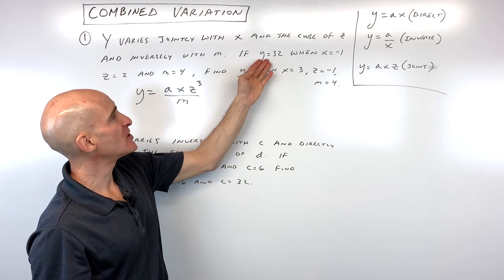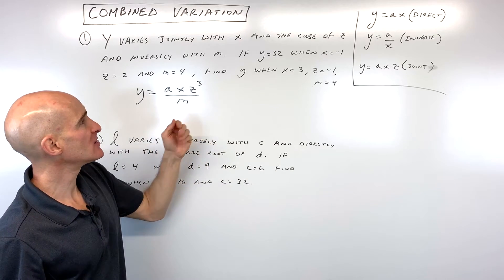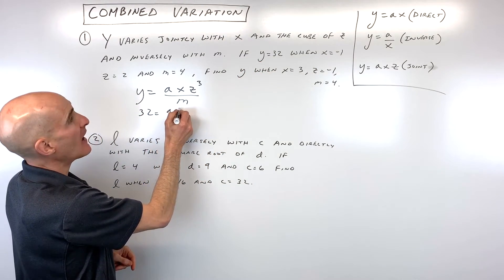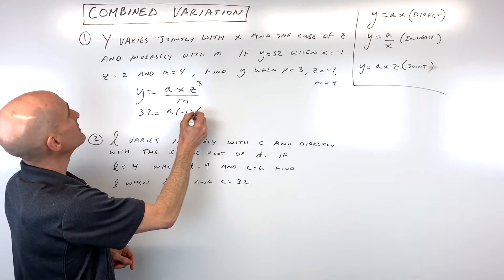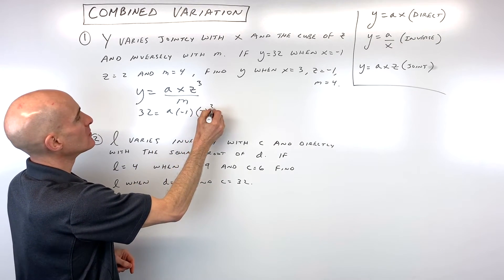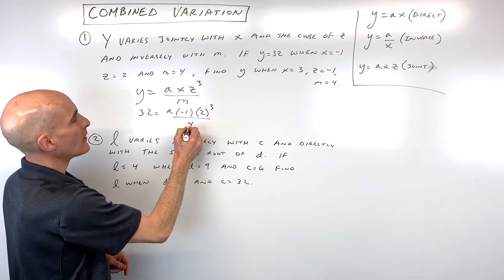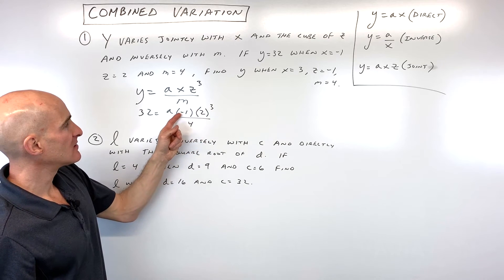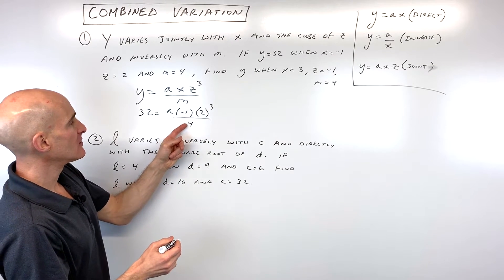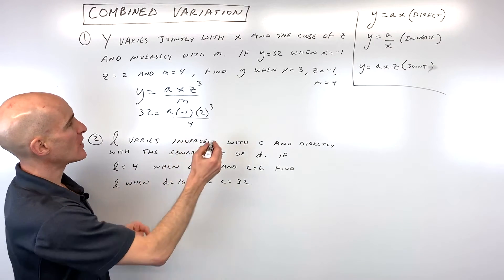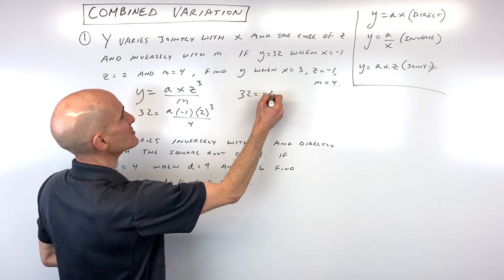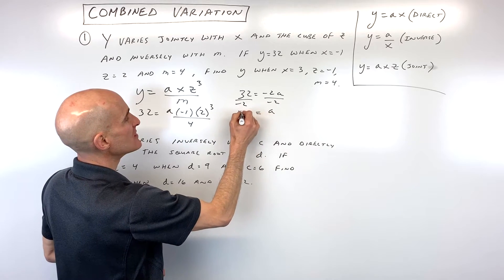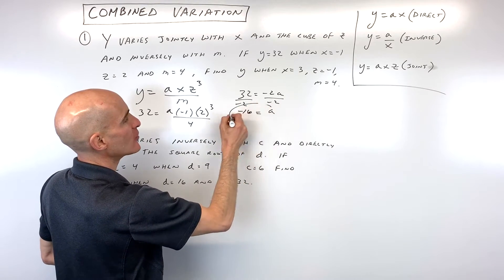Now they give us some information to help us solve for the a value, the constant of variation. They say when y is 32, x is negative one, z is two, and m is four. So the reason they're giving us that information is so we can solve for a. We've got two cubed is eight, times negative one is negative eight, divided by four is negative two. So we have 32 equals negative two a. If we divide both sides by negative two, you can see that our constant of variation, our a value, is negative 16.